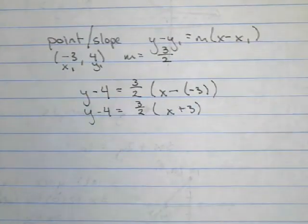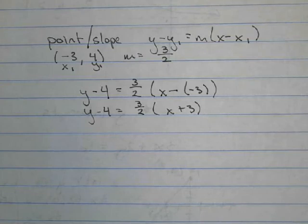And that's how we can substitute in to the point-slope form of a line to build an equation of a line.